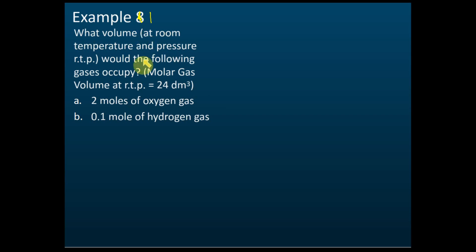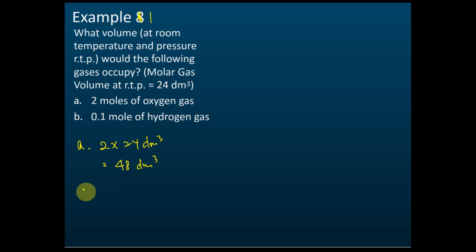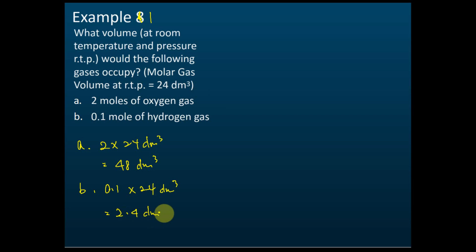What volume at room temperature and pressure would the following gas occupy? For part A, at room temperature and pressure: 2 multiplied by 24 dm³ equals 48 dm³. For part B: 0.1 multiplied by 24 dm³ equals 2.4 dm³. Even though one is oxygen and one is hydrogen, whatever gas it is, we use the same method — the number of moles multiplied by the molar volume of gas.